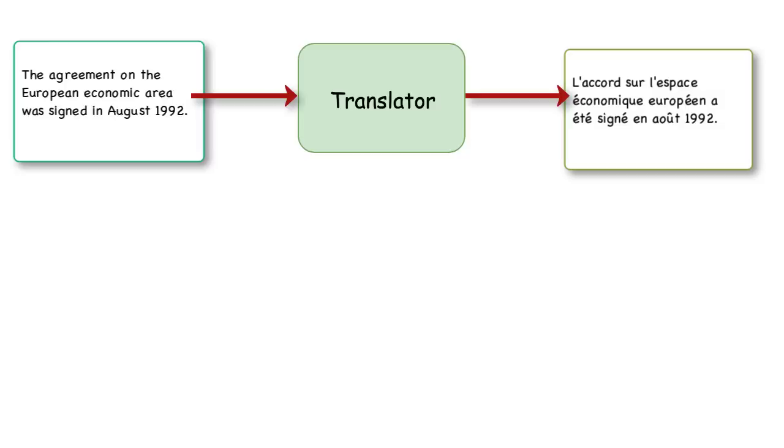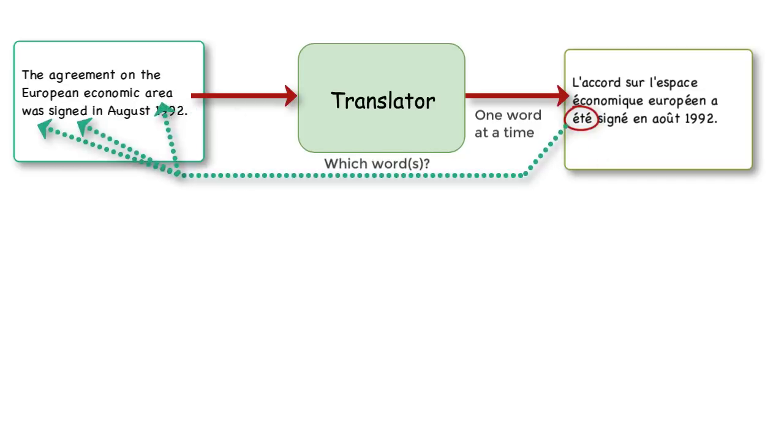Our translator would generate the translated French sentence one word at a time. While generating some ith word, like été, which words in the English sentence should be considered?